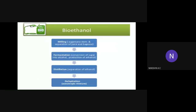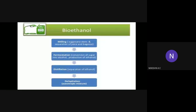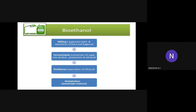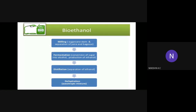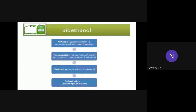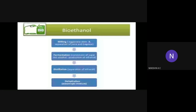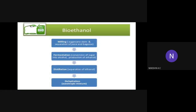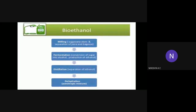There are some stages through which bioethanol is extracted. First stage: milling — separation of sugarcane juice and bagasse. Second stage: fermentation — conversion of sugar into alcohol. Third stage: distillation — separation of ethanol. Fourth stage: dehydration — separating water contents from ethanol.